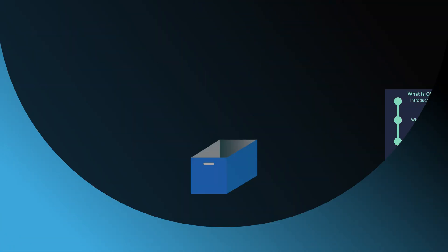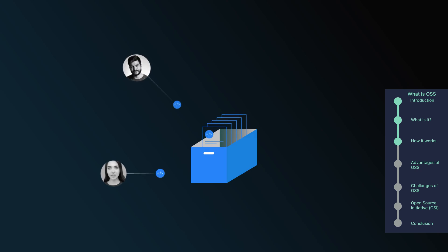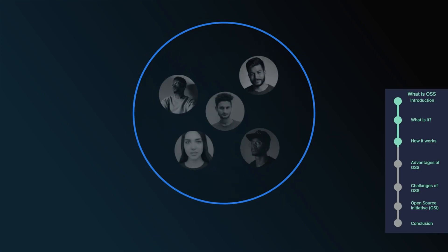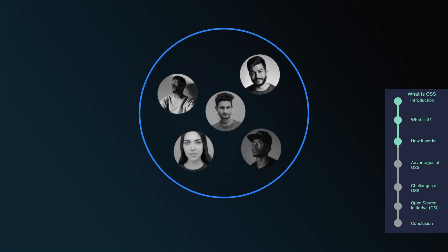The development process of OSS is a collaborative effort involving a global community. Unlike proprietary software, where the source code is kept secret, OSS projects make their code openly available. This allows developers worldwide to contribute their skills and ideas. Open source projects typically have a core team of maintainers who oversee the project's direction, review code contributions, and ensure adherence to coding standards.